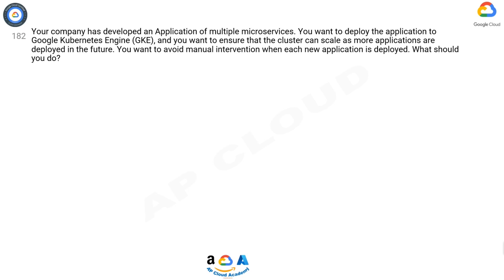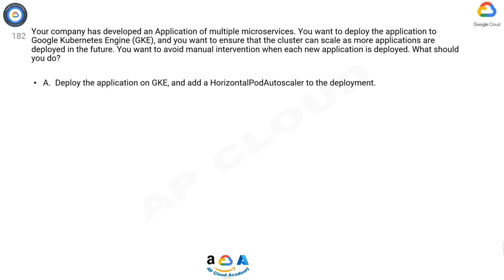Question 182. Your company has developed an application of multiple microservices. You want to deploy the application to Google Kubernetes Engine, GKE, and you want to ensure that the cluster can scale as more applications are deployed in the future. You want to avoid manual intervention when each new application is deployed. What should you do?